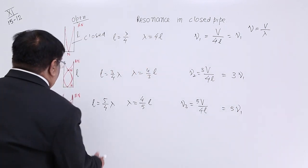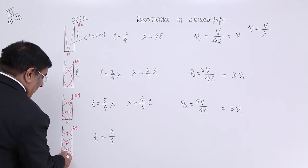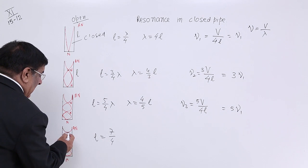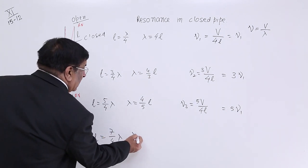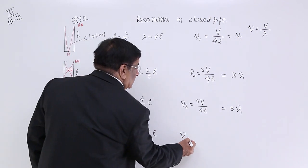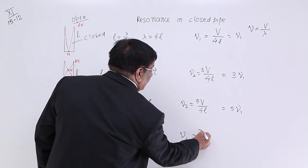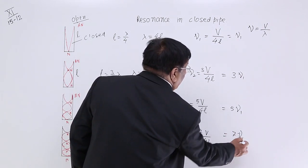So this now you can go yourself. L is equal to 7 upon 4. 1 and half and one-fourth. 7 upon 4 lambda. Lambda is equal to 4 upon 7L. ν₄ is equal to 7V upon 4L. And this is equal to 7ν₁.